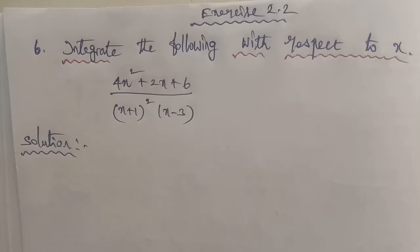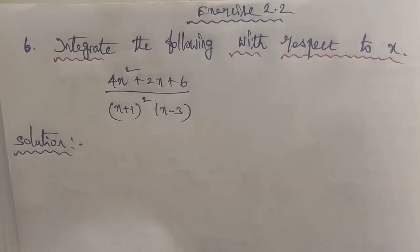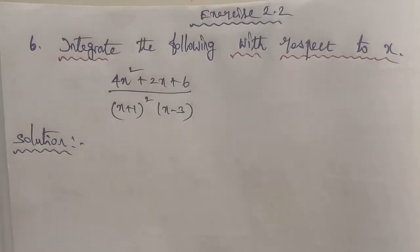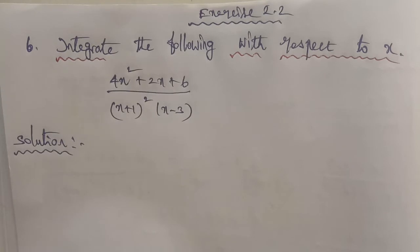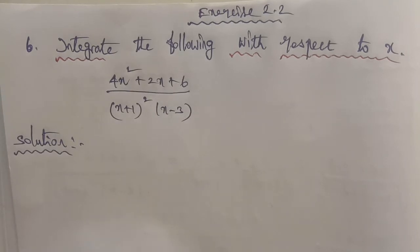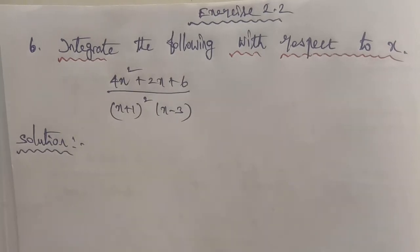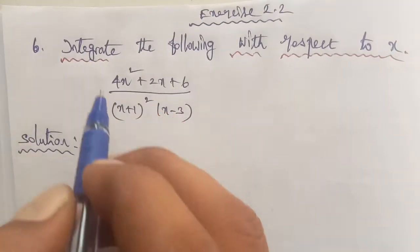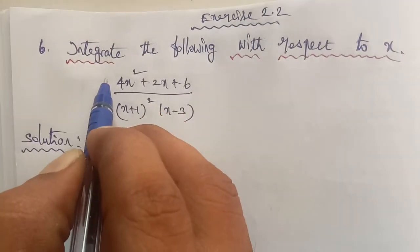Hi students, I am Gopinath. Today I am solving Business Maths exercise 2.2, question number 6: integrate the following with respect to x. The given question is 4x squared plus 2x plus 6 divided by (x plus 1) whole power squared into (x minus 3).